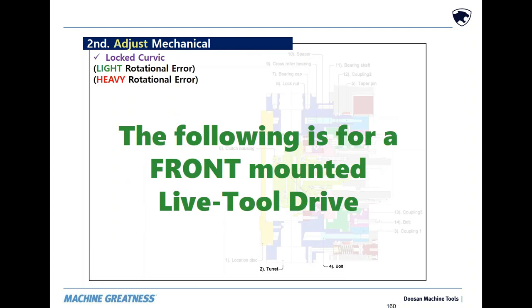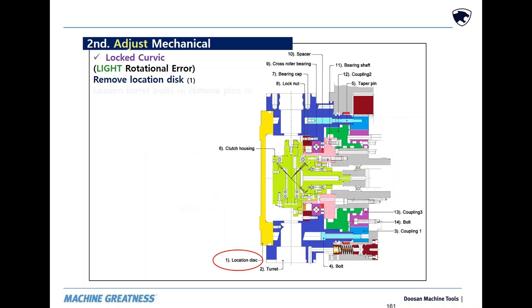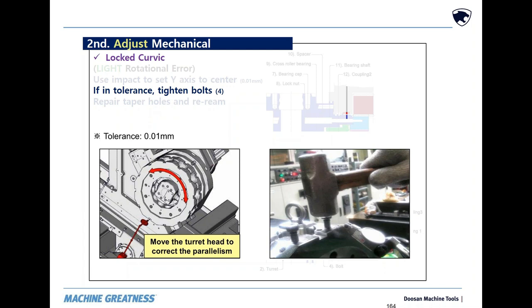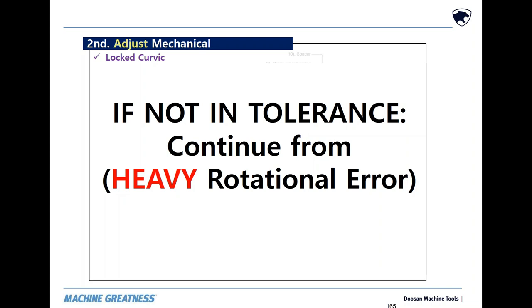On the turret for a front mount live tool there are two process versions: one for a light bump and one for a heavy crash. For the light bump the process is quick. Remove the location disc. Loosen the bolts and remove the pins. Knock it fully to the left and indicate its angle. Knock it fully to the right and indicate its angle. If indicating it crosses over the middle, it can be aligned now. If it can be indicated straight, do that and lock it down. If it cannot be brought into tolerance, skip through to the next section.